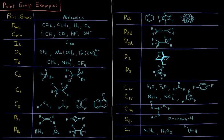And then the exceptionally hard to visualize like S4, which are like the 12 crown 4 ether. A lot of crown ethers have SN point groups.